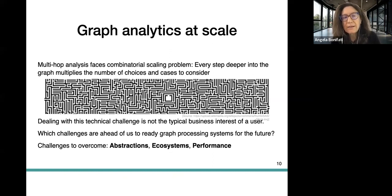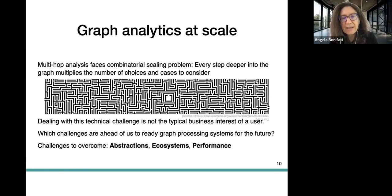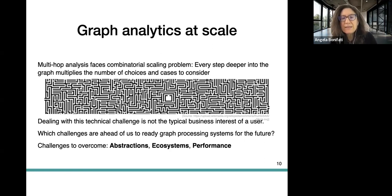Companies like Oracle PGX, Oracle Labs, Neo4j, and TigerGraph say that combining data science tasks with multi-hop analysis is today facing a combinatorial scaling problem. You can imagine it as a maze: every step helps you go deeper in the graph, but it multiplies the number of choices and cases to consider. They want graph processing systems that make this multi-hop analysis digestible for the user.